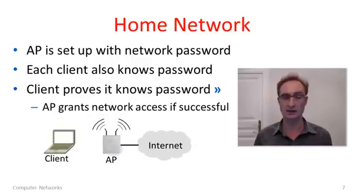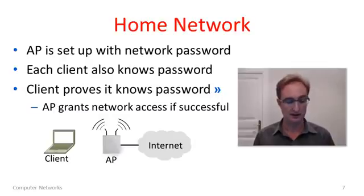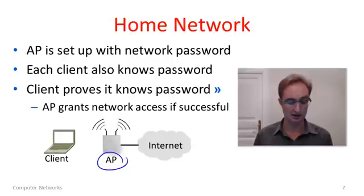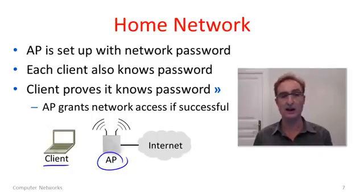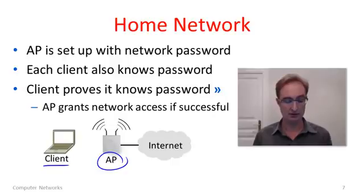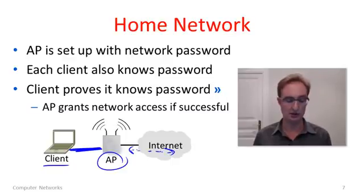That's what 802.11 security does. Let's talk about two different settings in which it can be used. The first is a typical home network setting. Here the access point is set up with a network password. The actors are just your clients — like your laptop — and your AP. Every user who has a client and wants to use the network must know the network password. The client proves to the AP that it has the password, and if successful, the AP grants access and all messages between the two are also protected and encrypted. That encryption is just over the link between the client and the AP.